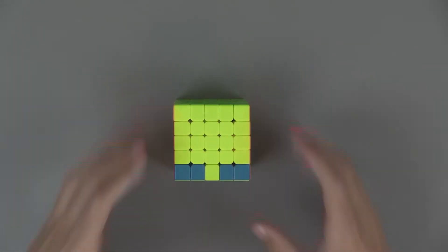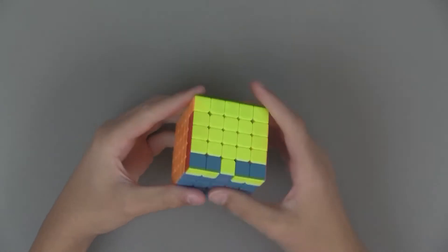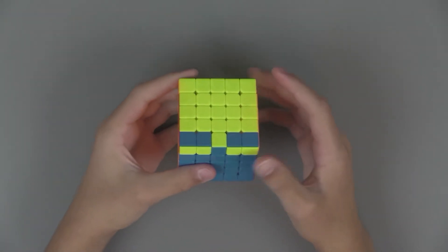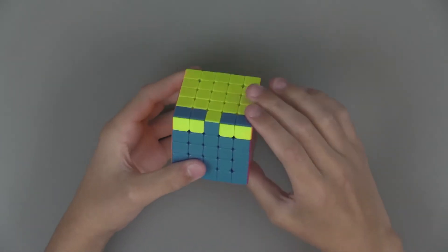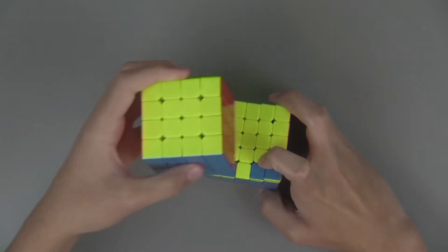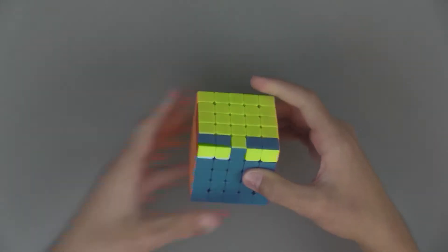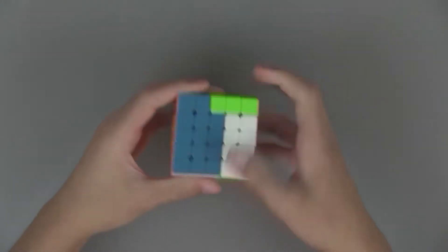Now for 5x5, all you can get is edge parity and it's literally the same algorithm as OLL parity for the even-numbered cubes. What you do is instead of doing the full right side up, you just do two of the three layers up and then double flick.